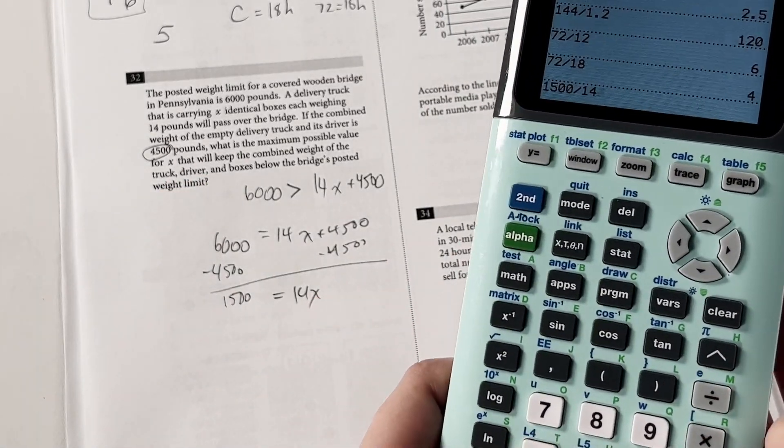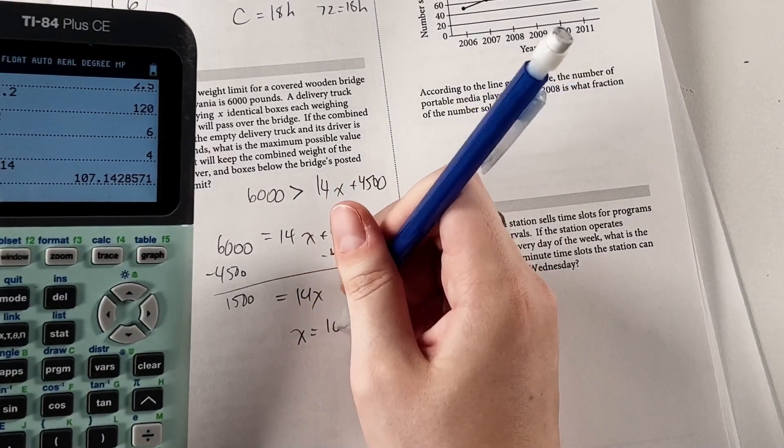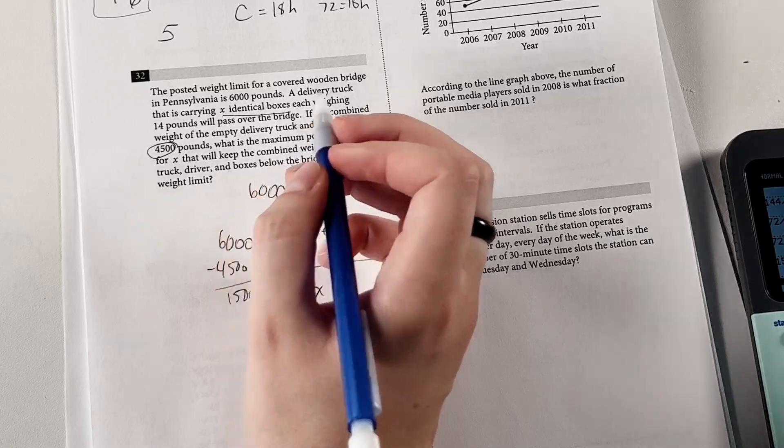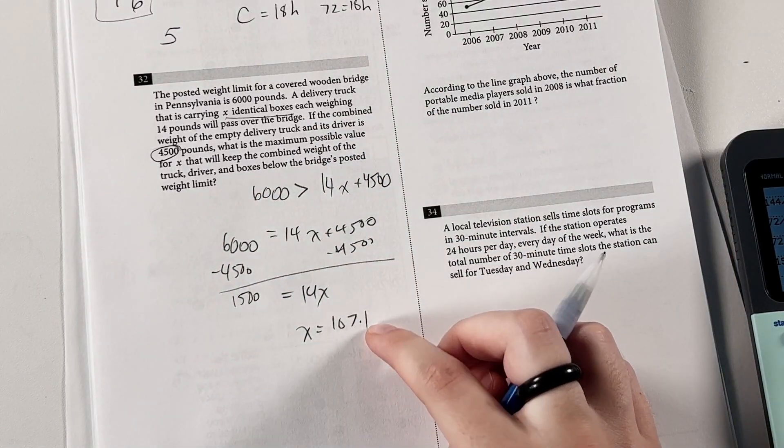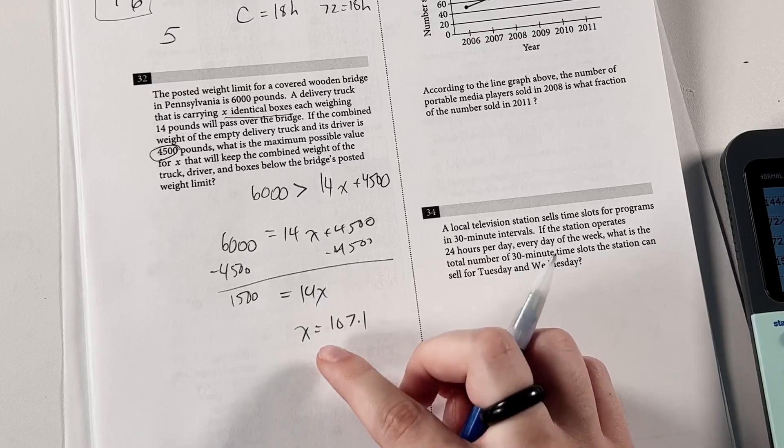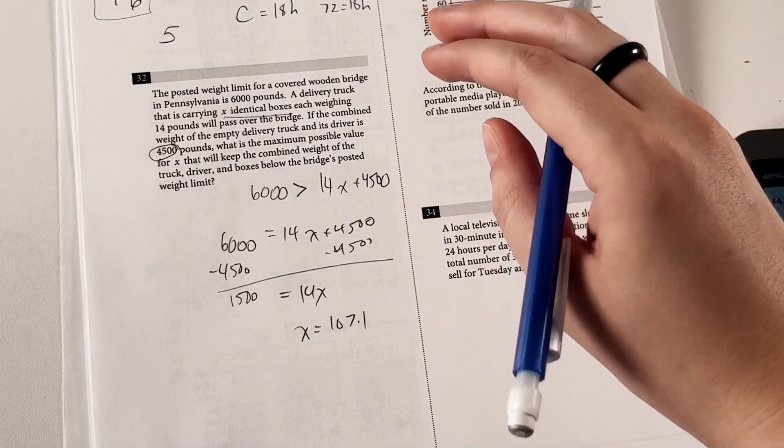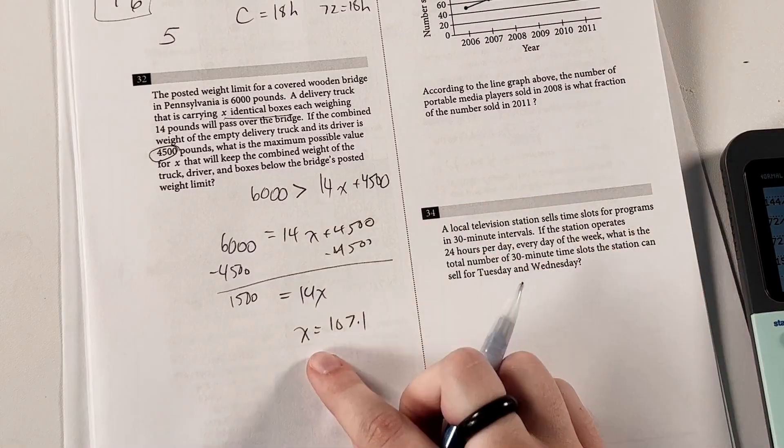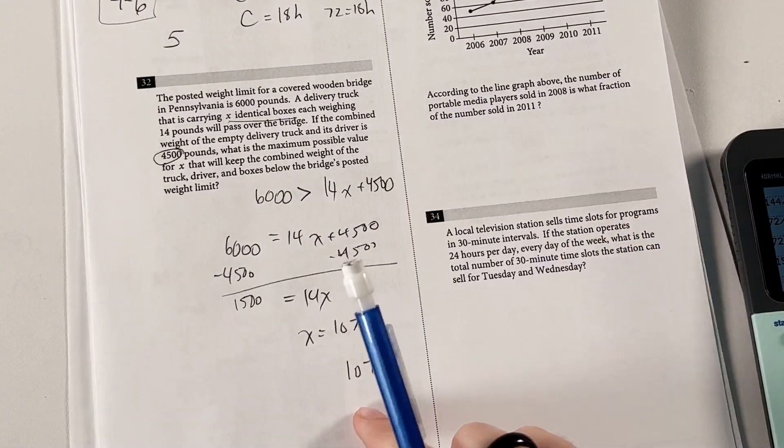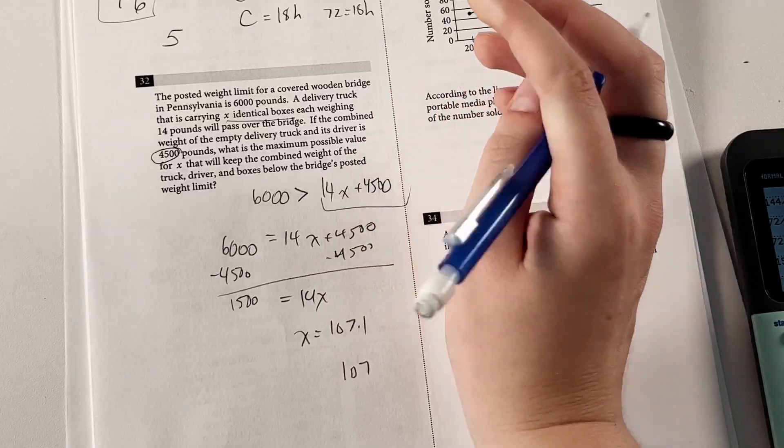And divide by 14. Alright, so we have x equals 107.1. Remember, x is equal to the number of boxes. We can't have a part of a box, so we're going to have to round this. And we definitely want to round this down, because if we went to 108, then that would be slightly over the limit, and that would collapse the bridge or whatever. So we want to go down to 107 boxes, just to be safe, so that we know that this whole expression is below 6,000.